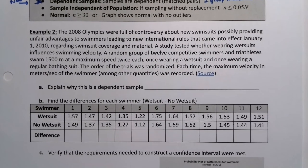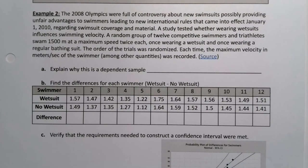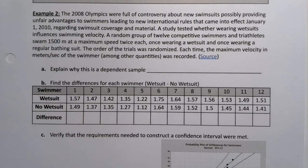So let's look at an example. The 2008 Olympics were full of controversy. I actually remember this happening, about new swimsuits possibly providing unfair advantages to swimmers, leading to new international rules that came into effect January 1st, 2010, regarding swimsuit coverage and material. A study tested whether wearing wetsuits influences swimming velocity. So 2008 Olympics, they were really covered almost up to their heels in these kind of wetsuits.